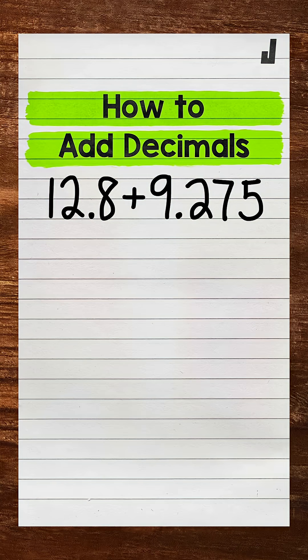I'm Math with Mr. J and in this video I'm going to cover how to add decimals. We have 12 and 8 tenths plus 9 and 275 thousandths.